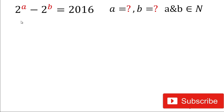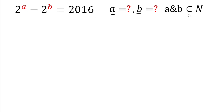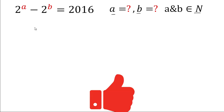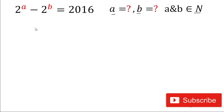Hey friends, welcome back. Today in this video we will solve this exponential expression. The given problem is 2 power a minus 2 power b equals 2016, and we have to find the value of a·b where a and b are natural numbers. Let's start the video.